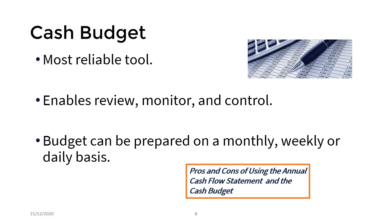The cash budget provides more granularity than the cash flow statement. That is, whereas the cash flow statement assesses a company's cash position between fiscal dates, the cash budget assesses a company's cash position from one month to the next, or possibly from one week to the next.